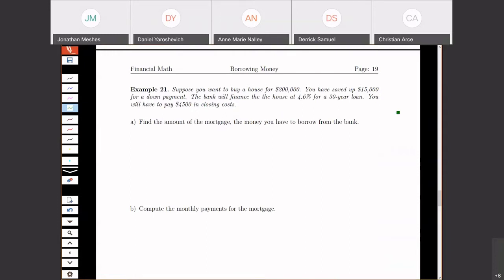So I have $15,000. I'm going to have to pay $4,500 for closing costs. So my down payment is going to be $15,000 minus the closing costs. So even though I've saved up $15,000, only $10,500 is actually going towards the house.